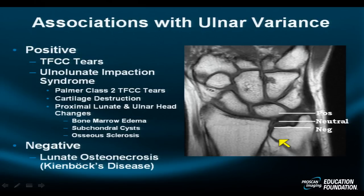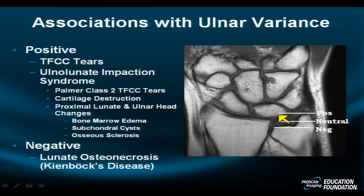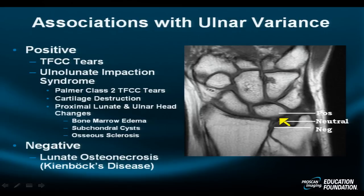There is a classification system described by Palmer, known as the Class 2 classification for degeneration of the TFCC. The progression includes positive variance with thinning of the TFCC, then a tear, lunatoand ulno-chondromalacia, lunato-triquetral ligament interruption, and then advanced arthrosis. The chondromalacia often precedes or coincides with the presence of a triangular fibrocartilage tear.